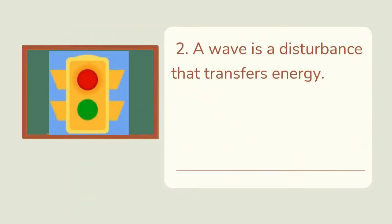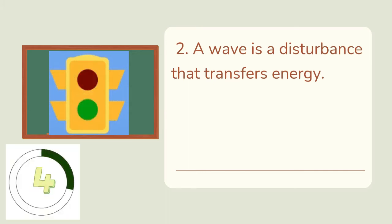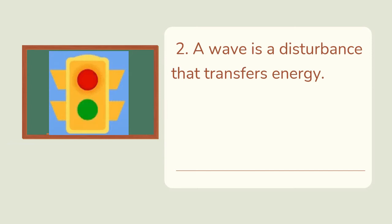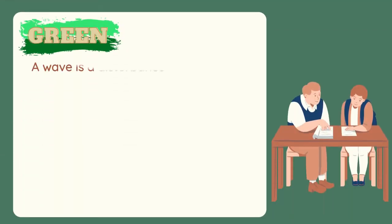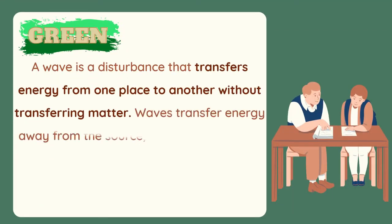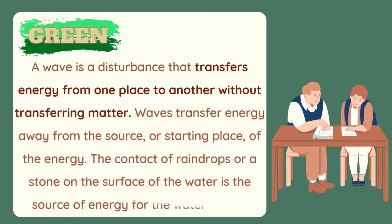Second: a wave is a disturbance that transfers energy. You have five seconds to answer. The answer is green. A wave is a disturbance that transfers energy from one place to another without transferring matter. Waves transfer energy away from the source or starting place of energy. The contact of raindrops or a stone on the surface of water is a source of energy from the water waves.